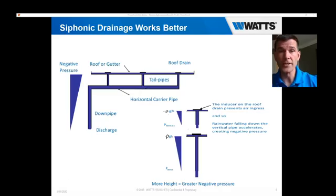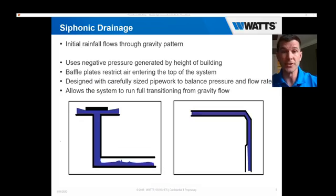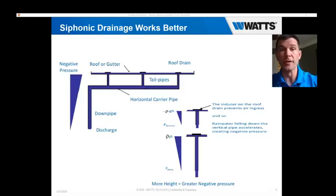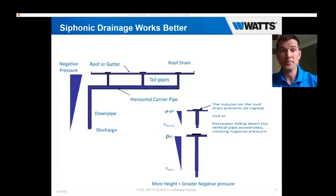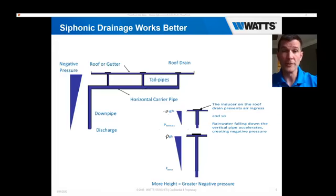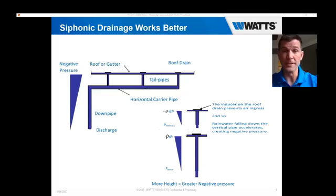With siphonic drainage, negative pressure is generated by the height of the building — the higher the building, the larger the pressure. As the water level gets above that siphonic plate, it draws in the water, completely fills the piping system, and allows the pipes to actually run completely horizontal as a carrier pipe through to the downpipe and discharge.